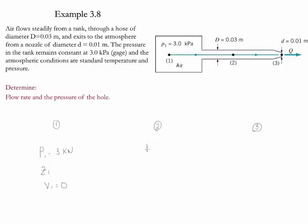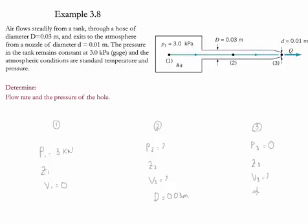For pressure at point two, we don't know it so that's an unknown value. The elevation is given as z2, and notice that the streamline is horizontal so z1, z2, and z3 are going to be constant. The velocity at point two is unknown and the diameter is given as 0.03 meters. For p3, we assume the pressure is equal to zero since we have atmospheric conditions, with z3 also equal to the others. The velocity at point three is also unknown and the diameter is 0.01 meter.